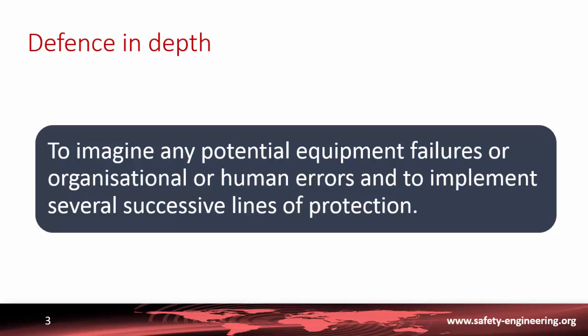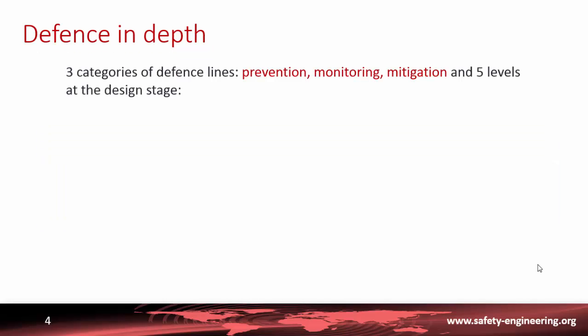Basically, defense in depth is to imagine any potential equipment failures, organizational or human errors, and to implement several successive lines of protection. If something goes wrong, you will have a first barrier — the first way of avoiding the consequence — and if this first barrier or system fails, you will have a second line of protection, and even a third. With that kind of configuration, you will need two, three, or four successive failures from an initial problem to get any significant consequences.